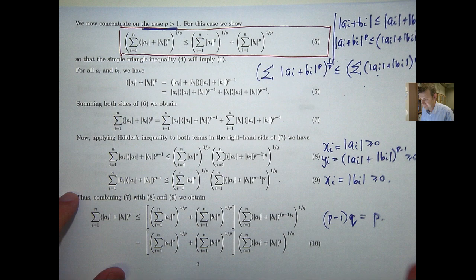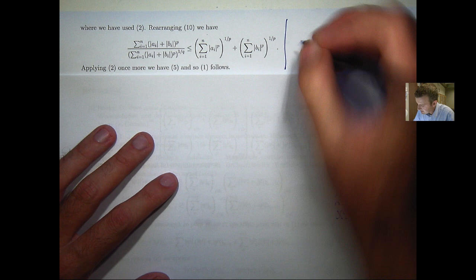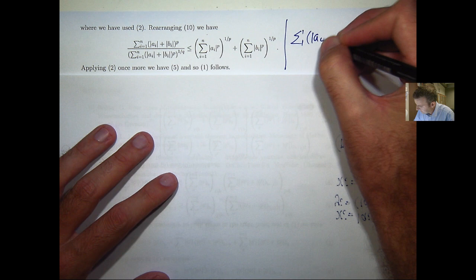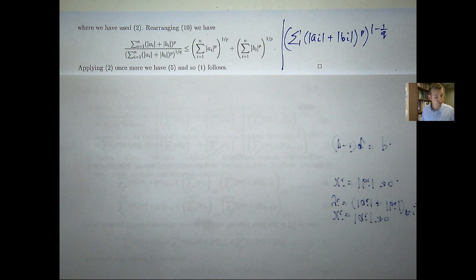We get this now. What we can do is simplify the left-hand side. Essentially on the left-hand side, you get something like this, just using your exponent laws. And of course, 1 minus 1 on q is just going to be 1 on p, again from this condition here.